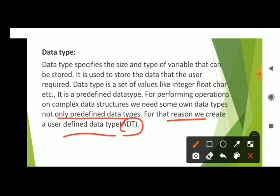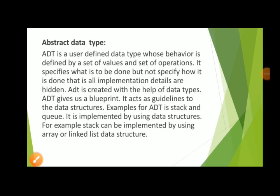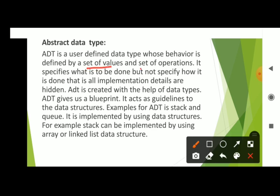ADT stands for abstract data type. In complex data structures, operations are performed beyond what predefined data types can handle. We need to use multiple values and accept different members. ADT is a user-defined data type whose behavior is defined by a set of values and a set of operations. We create data structures and define the operations to be performed.